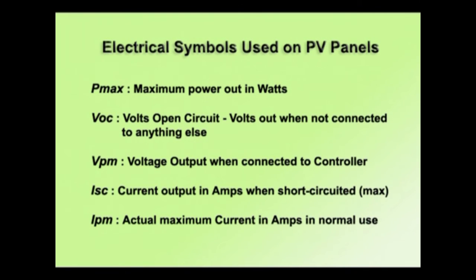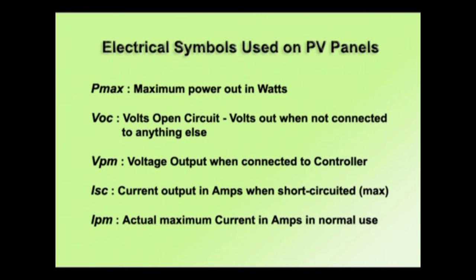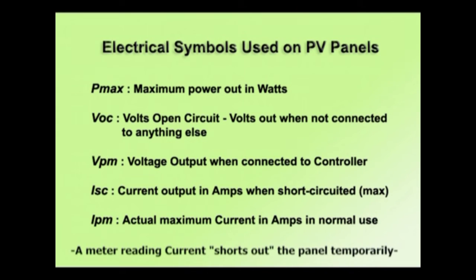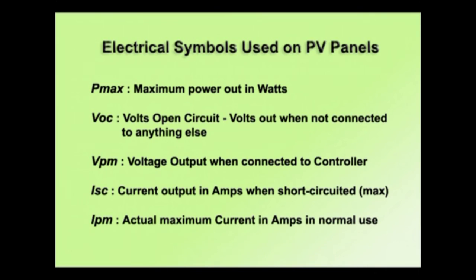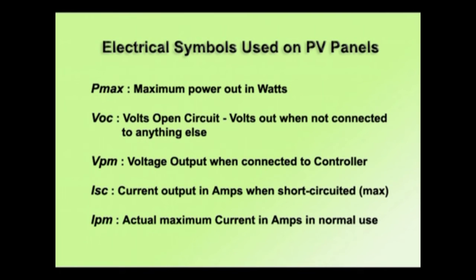Here are the electrical symbols on the back of the panel. First is P max – the maximum power output in watts. Then VOC, or voltage open circuit – the volts coming out when not connected to anything. Then VPM – the voltage output when the panel is actually connected to the charge controller in circuit. Next is ISC, the short circuit current in amps measured across the panel output in the sun when not connected. And IPM, the actual maximum current in amps when in normal use. To find actual maximum power output, multiply VPM times IPM.